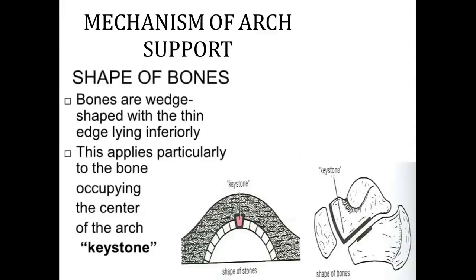The mechanism of arch support — mainly the shape of the bones. Bones are wedge-shaped, with the thin edge lying inferiorly. This applies particularly to the bone occupying the center of the arch, which is called the keystone. You can observe the arch here; the key is in the center — keystone. And here it is the talus bone.